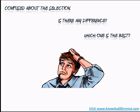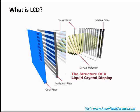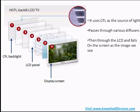LCD TVs and LED TVs are technically both LCD TVs, and the screen on both TVs is a liquid crystal display. This allows the TV to be flat and thin compared to traditional CRT screens. An LCD display has two layers of glass which are polarized and joined together. The liquid crystals then pass or block the light to display the television picture. The crystals do not produce any light — the light comes from a series of lamps at the back of the screen.